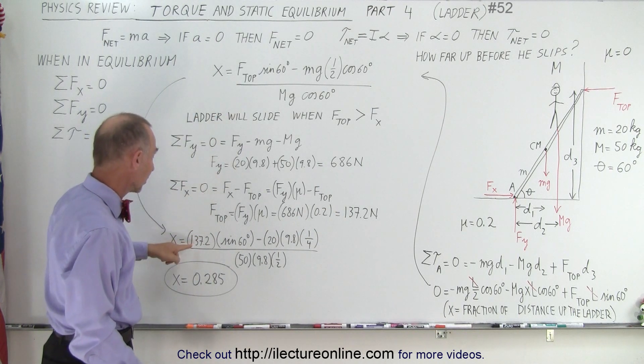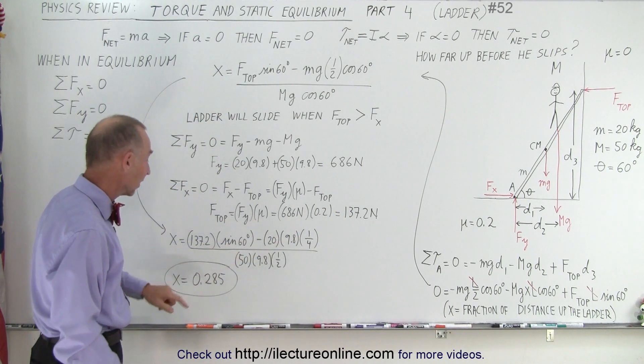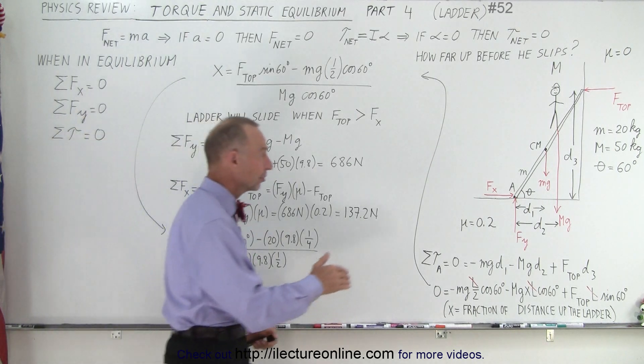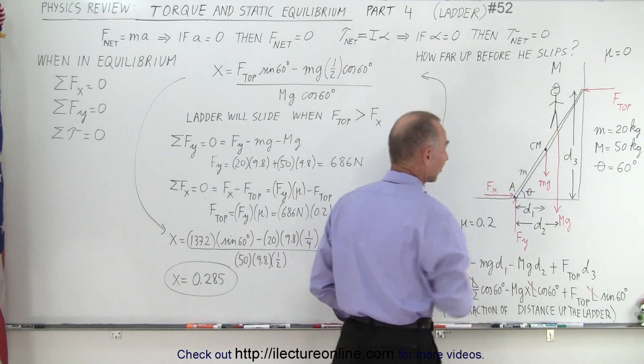Then we plug everything back in. So we plug that in here. We then plug in all the other values and we get x equals 0.285 which is the fractional distance the person can go up the ladder before the ladder begins to slide.